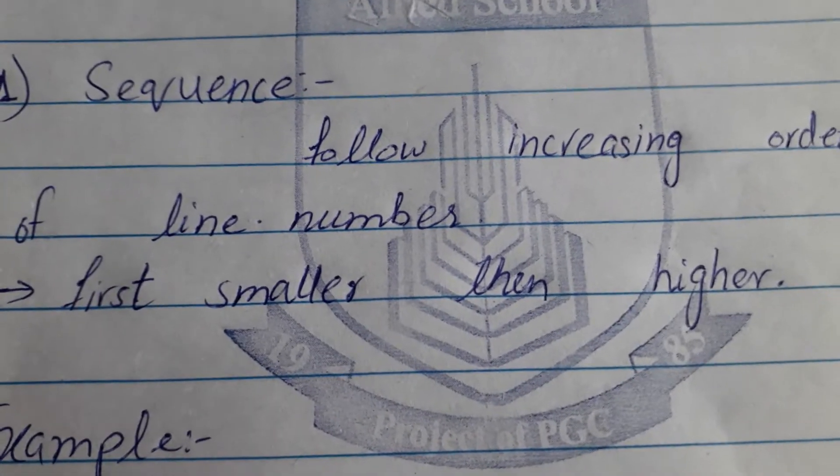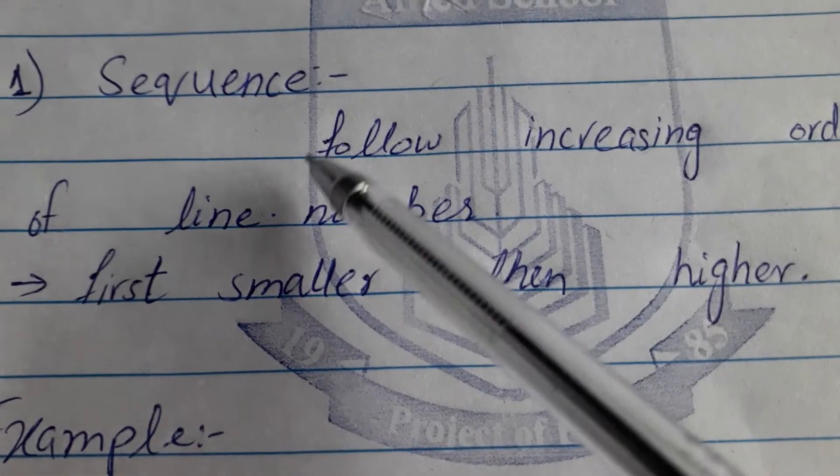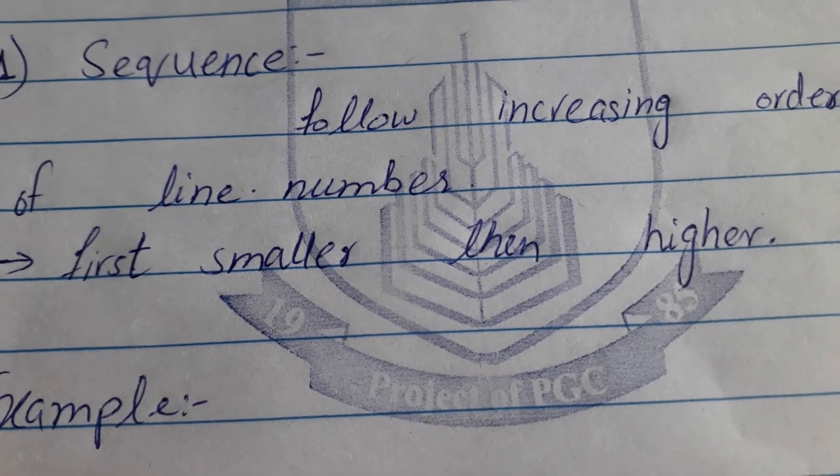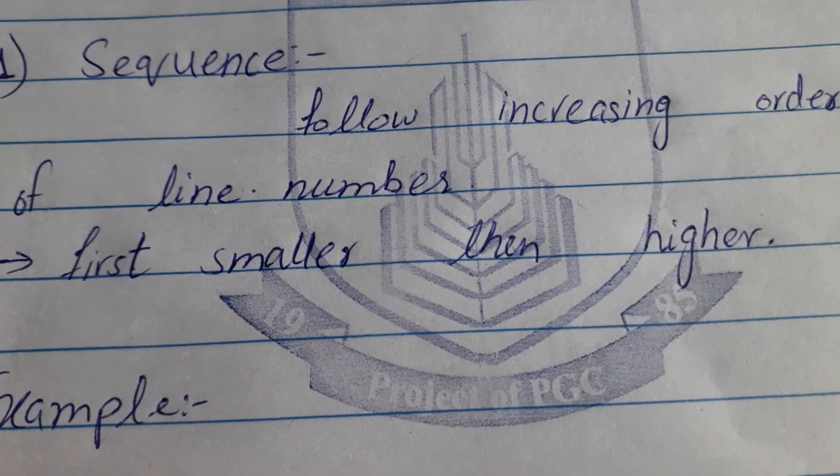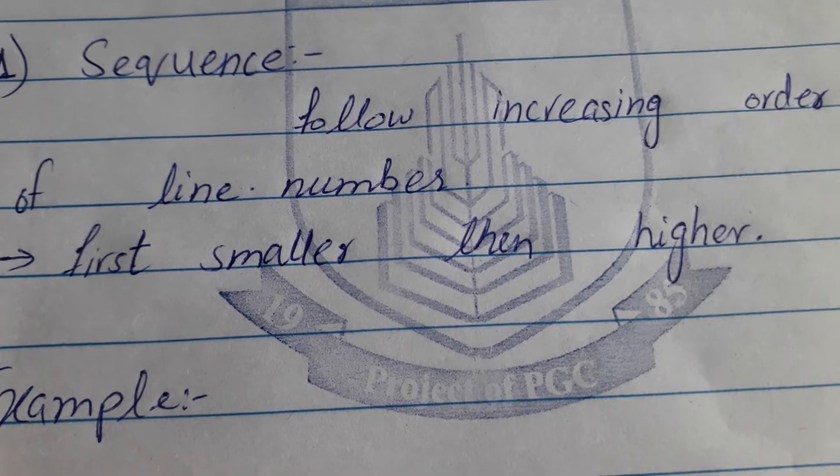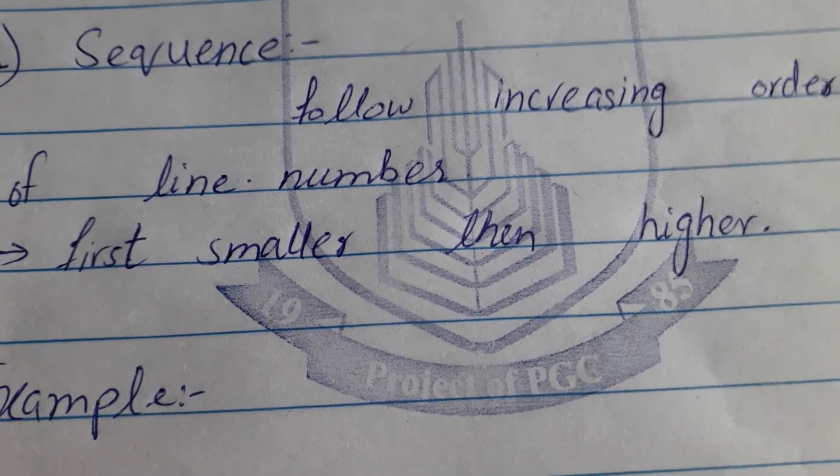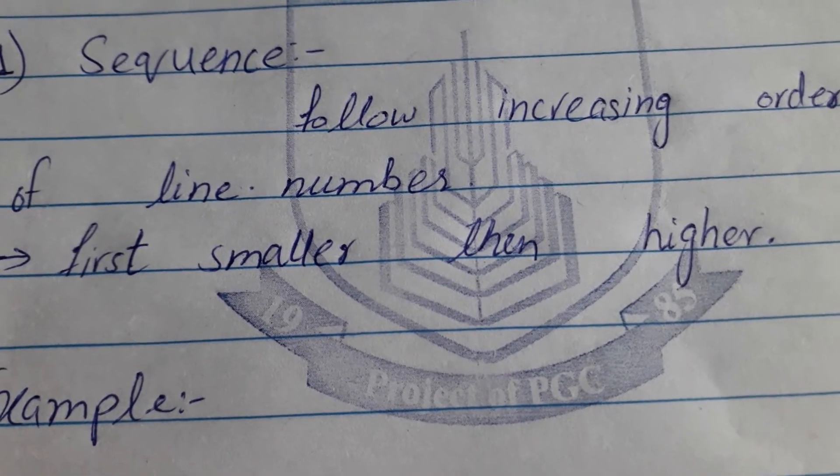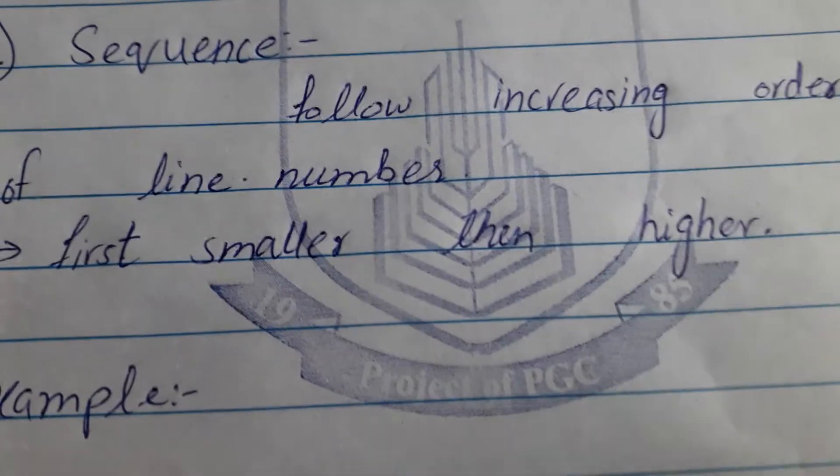The sequence, first of all, how to work with the line number. First we have to execute the line number 10, then the line number 20. It runs with a sequence. It runs with 10, 20, then it will execute the line number 30. It will follow a sequence.